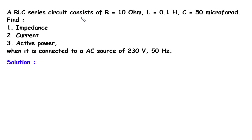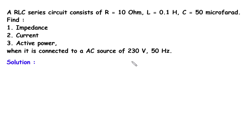A RLC series circuit consists of R equal to 10 Ohm, L equal to 0.1 Henry, C equal to 50 microfarad. Find: number 1, impedance; number 2, current; number 3, active power — when it is connected to an AC source of 230 volt, 50 hertz.